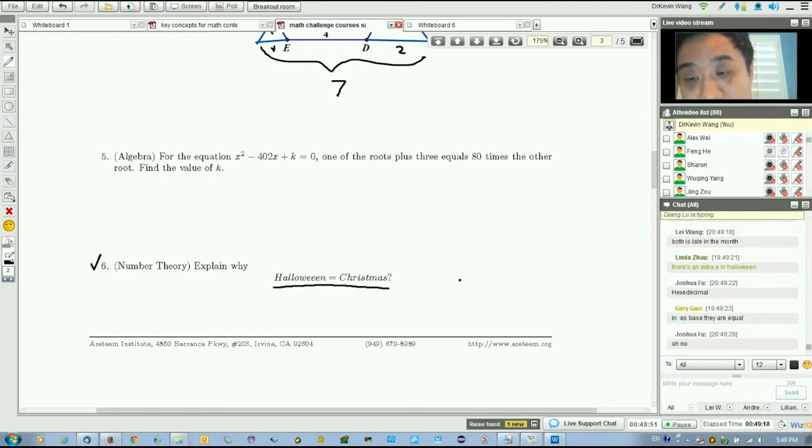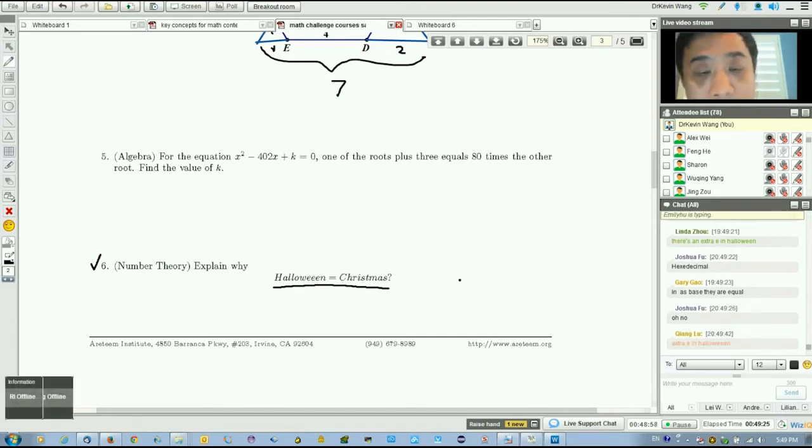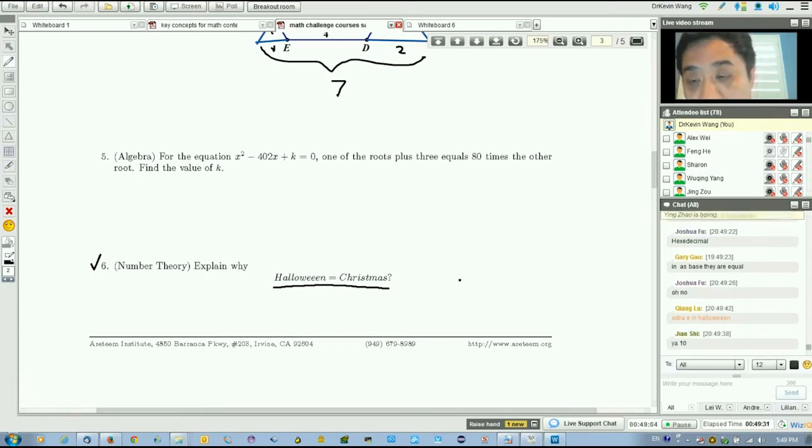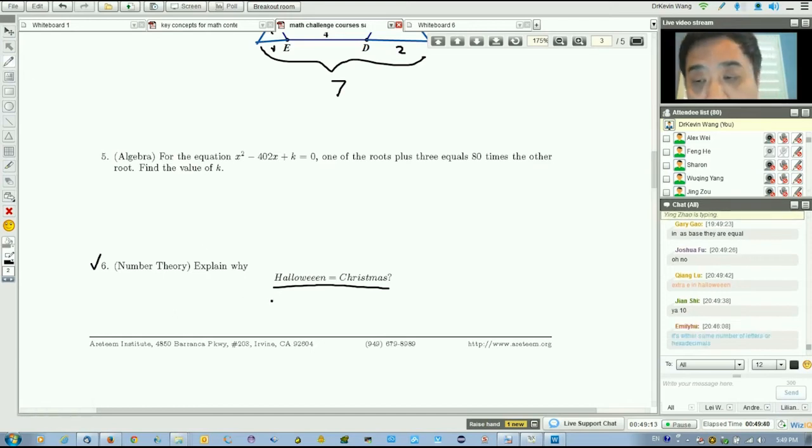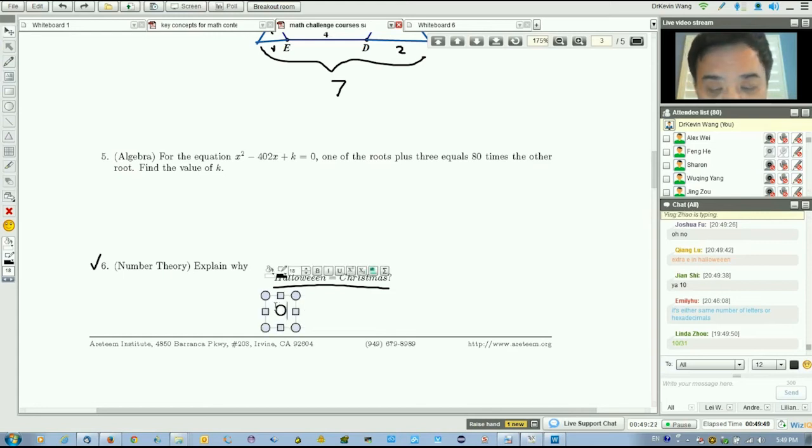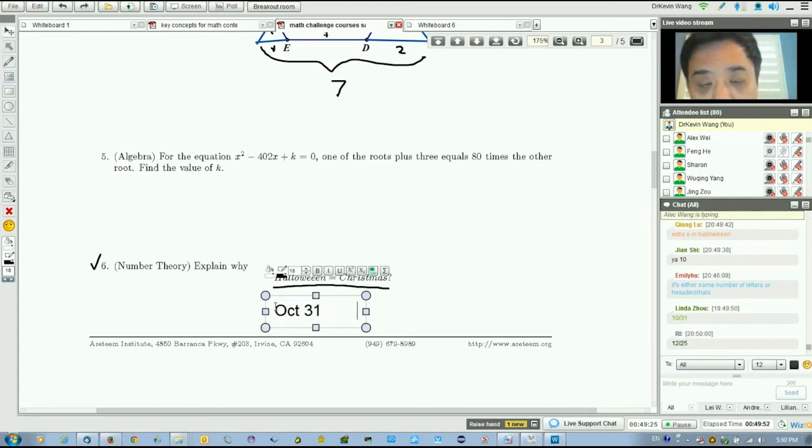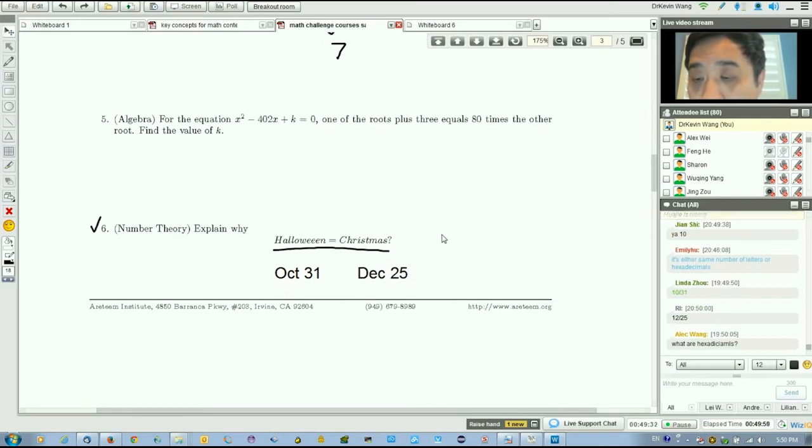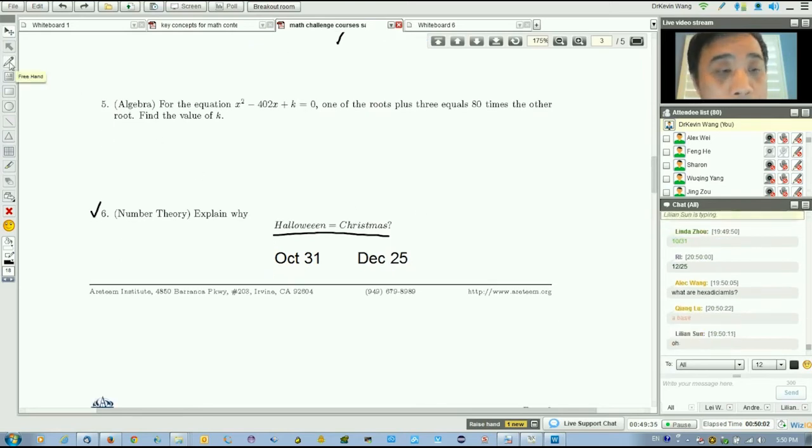Is it something to do with letters to numbers? Both have nine letters, but that doesn't mean they're equal. Let's look at what Halloween is: October 31st. And what's Christmas? December 25th.